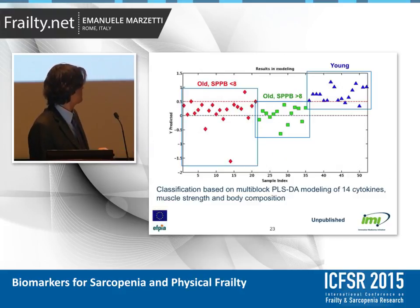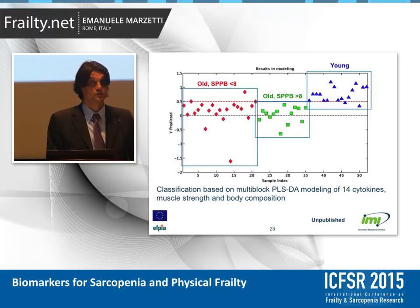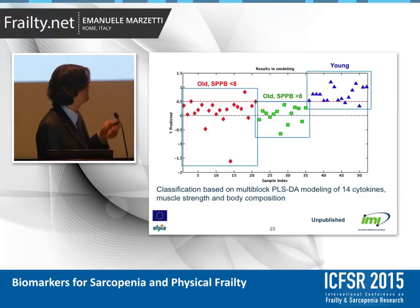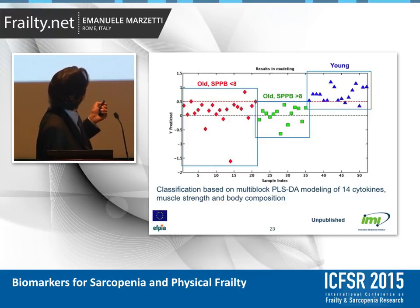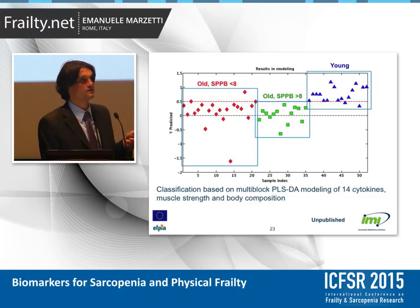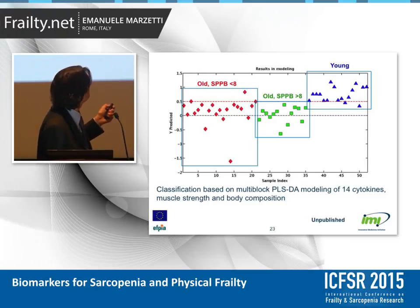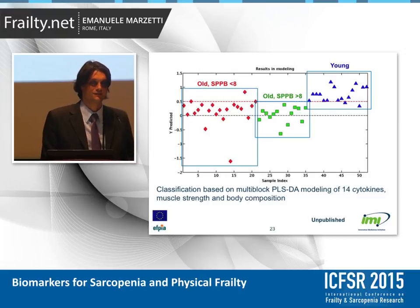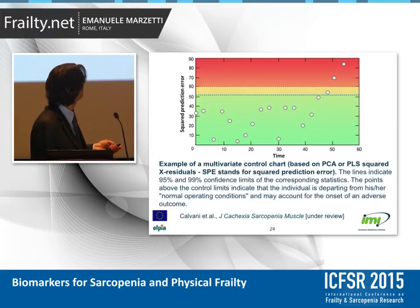A recent paper by Pedersen showed that there are at least six biomarkers consistently associated with low physical performance across a number of studies. This is an unpublished observation from our group where we attempted a multi-block PLS-DA modeling using 14 cytokines, muscle strength measurements, and body composition. The model correctly classified older and younger people, and amazingly, among the older people, the model was able to clearly distinguish persons with different levels of functioning — while being completely blind to this information during training.